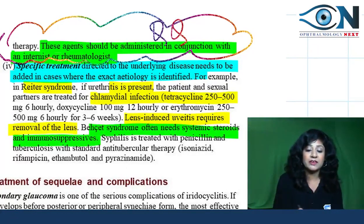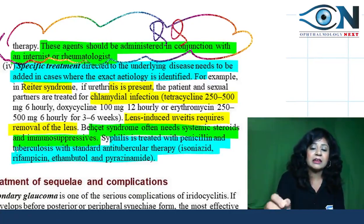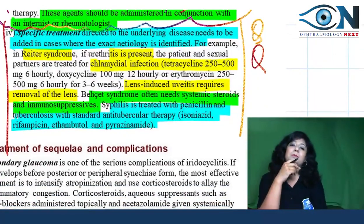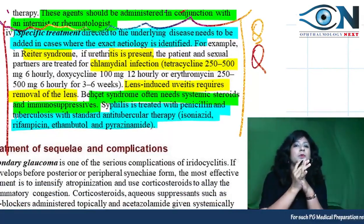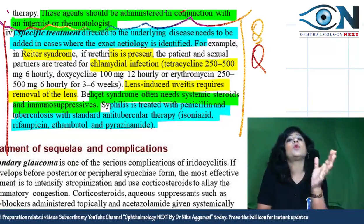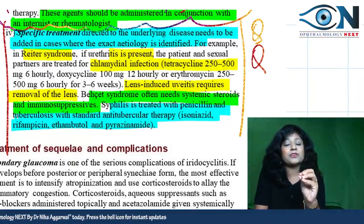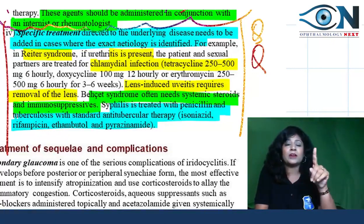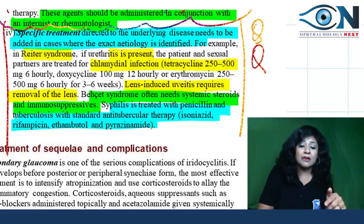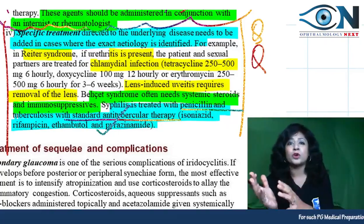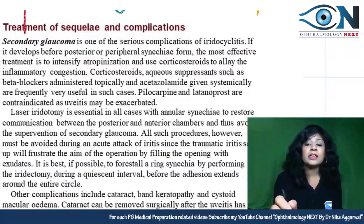For Behcet's syndrome, give systemic steroids and immunosuppressors. For syphilis, give penicillin. For tuberculosis, give ATT (anti-tubercular therapy). Treatment must combine both uveitis treatment and causative treatment. In clinical case scenarios, all options must be considered — sometimes the answer combines two or more components.